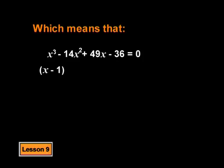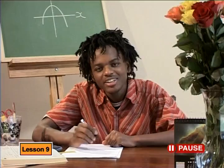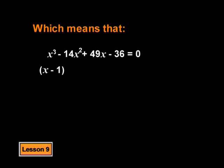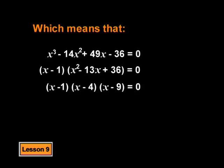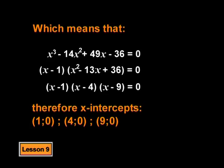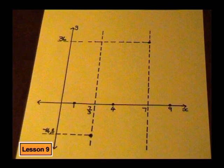Which means x cubed minus 14x squared plus 49x minus 36 equals x minus 1 times something. Factorising by inspection gives x squared minus 13x plus 36, which factorises further to give x-intercepts at (1, 0), (4, 0), and (9, 0). Let me add that to the sketch. So this x-intercept must be 1, this one 4, and this one 9.